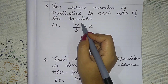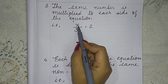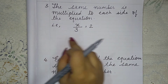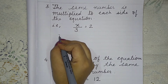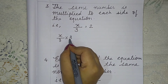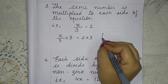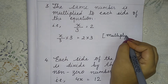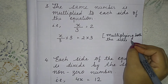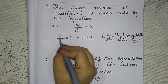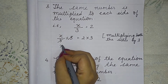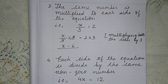The third point: the same number is multiplied to each side of the equation. For example, x divided by 3 equals 2. We multiply both sides by 3, so x equals 2 into 3, which is 6.